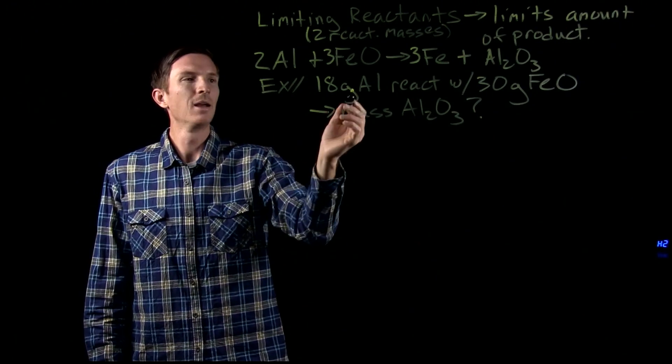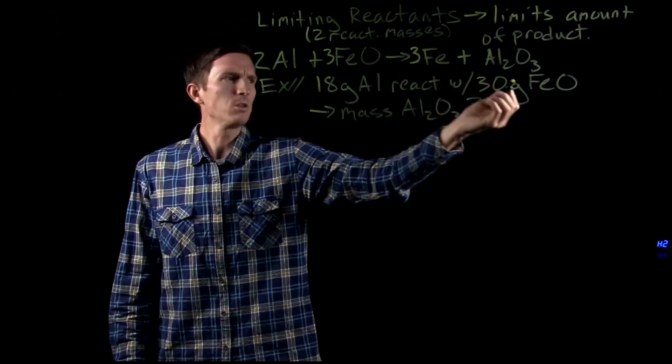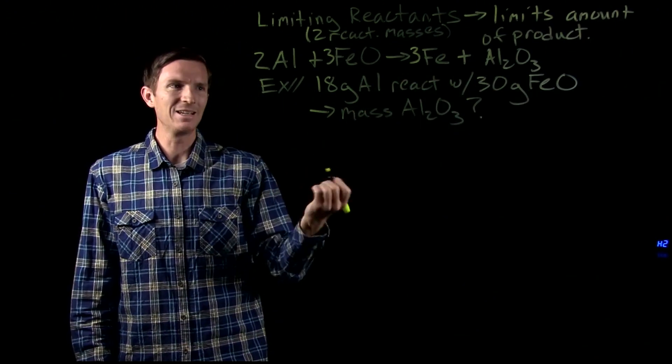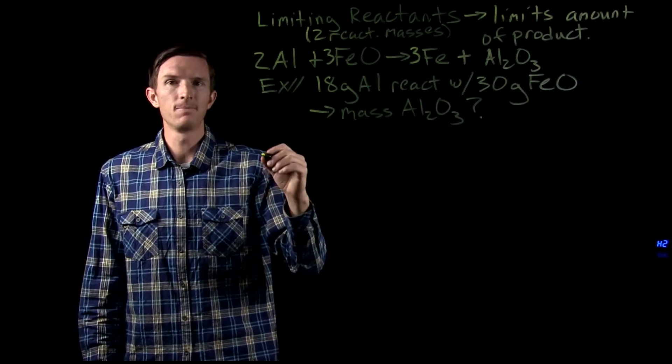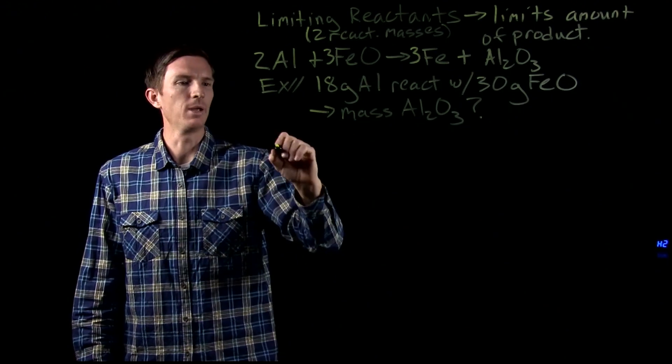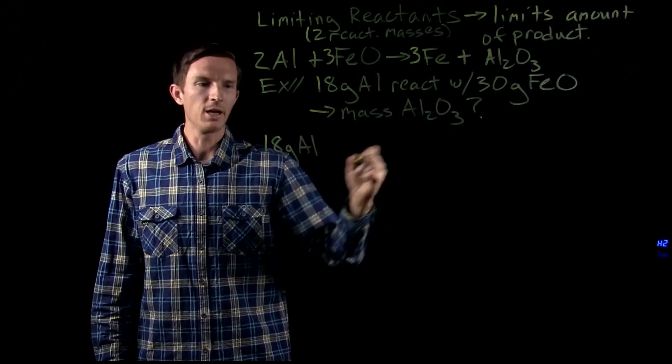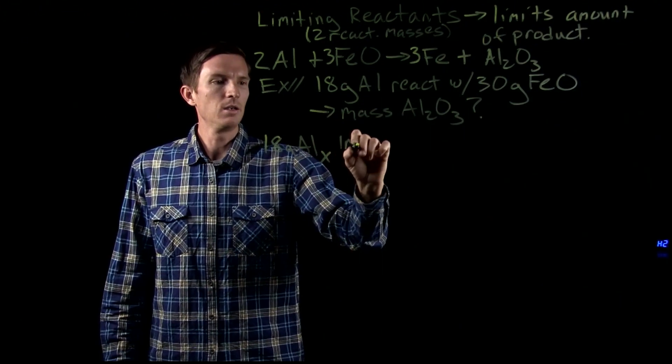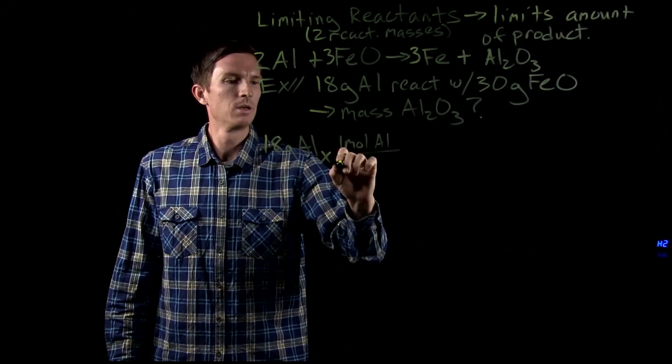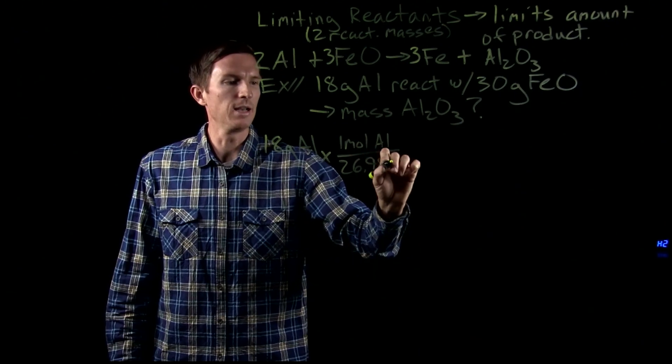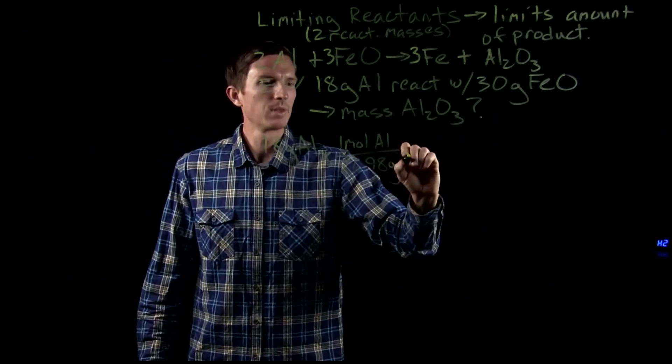So we're going to do this by saying, what if we have 18 grams of aluminum? How much iron oxide do we need to get rid of all that 18 grams? And then we're going to get to a conclusion from that. So we do 18 grams of aluminum, this is a mass-to-mass conversion. Each mole of aluminum is 26.98 grams.